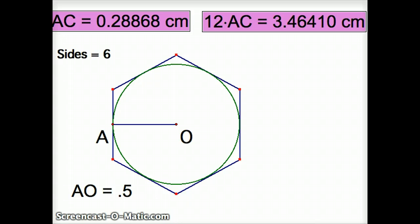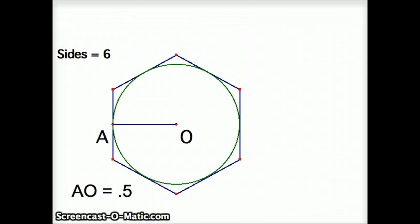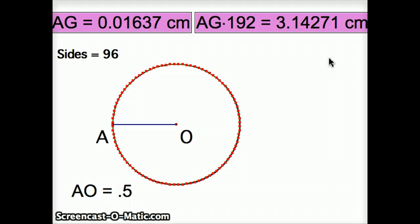Then his very clever idea was to increase the number of sides to 12, and find the perimeter of that 12-sided figure, and then to 24. And then again, he doubled the sides to 48, and he stopped when he got to a 96-sided figure, and he worked out the perimeter of this figure to be 3.14271, which, for his purposes, was close enough for what he was trying to achieve.